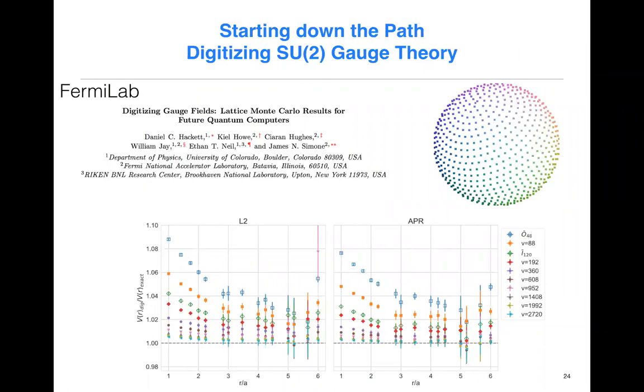This work also coming out of Fermilab with the strong lattice QCD presence, one is able to look at the impact of having finite resources on your digital quantum computer and understanding the impact of discretization, for instance, of SU2 gauge groups. I point you to this paper. It's very nice and I recommend if you're interested in looking at this work.